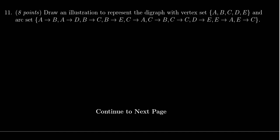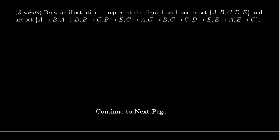In this video we provide the solution to question number 11 for practice exam number 2 for Math 1030, in which case we have to draw the illustration of a digraph given the following information. We have five vertices A, B, C, D, E.